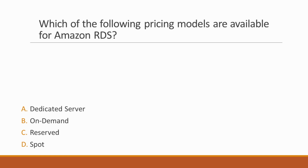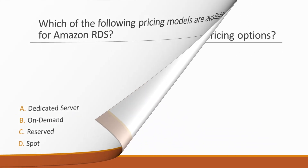Next question: Which of the following pricing models are available for Amazon RDS? Options: A. Dedicated server, B. On-demand, C. Reserved, D. Spot. Correct answers are option B and option C, because you can pay for Amazon RDS using either on-demand or reserved instance pricing.